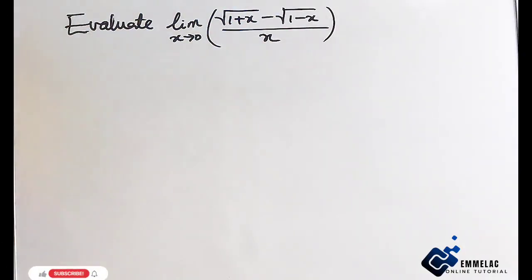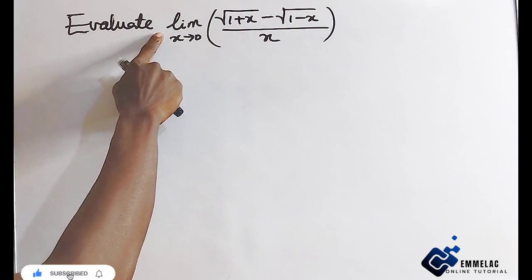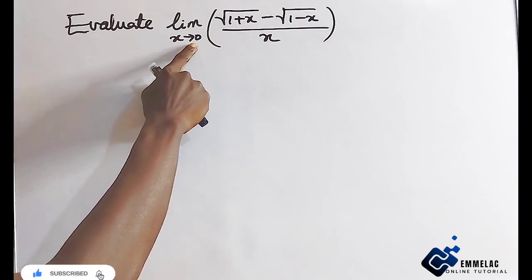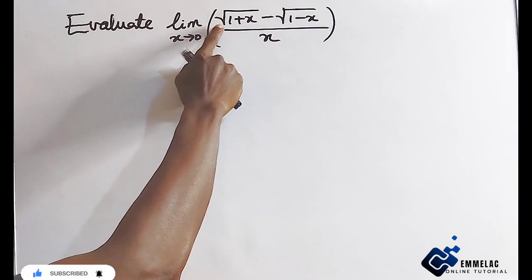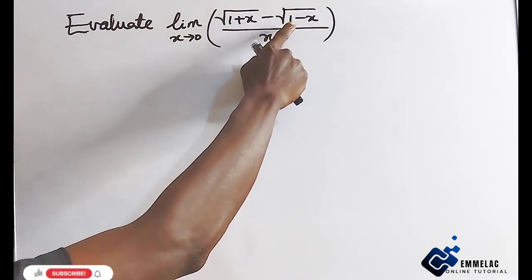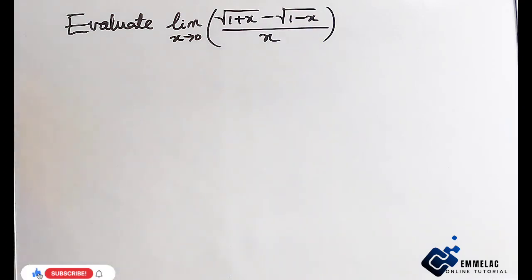Welcome to MLAP online class. Let's consider this question: evaluate the limit as x approaches 0 of the square root of 1 plus x minus the square root of 1 minus x, all over x.